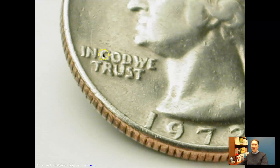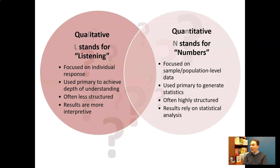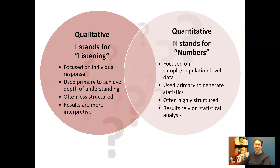But the word intent is at the heart of what makes them very different. When I'm teaching marketing research basics, I often say that the word quantitative has an N in it, and that N stands for numbers. When you conduct quantitative research, it's because you want to express your data in numerical, statistical fashion to describe a group of people.